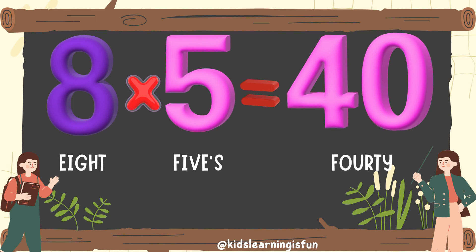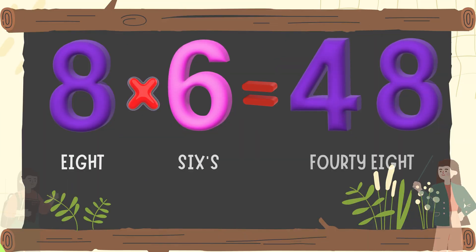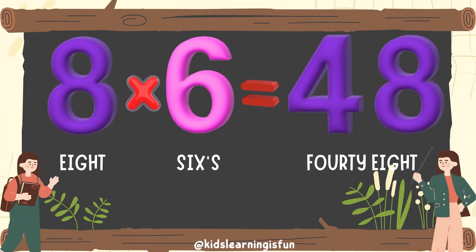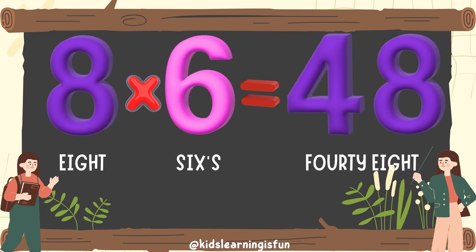Eight fives are forty. Eight sixes are forty-eight.